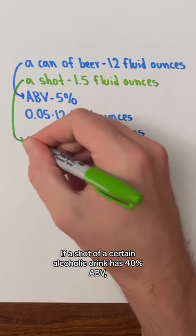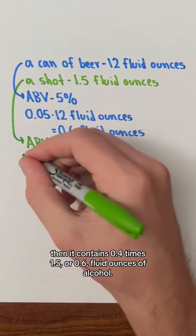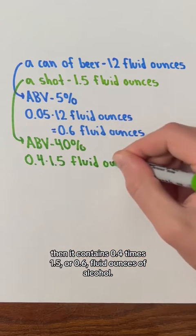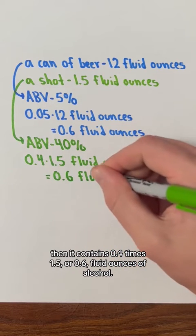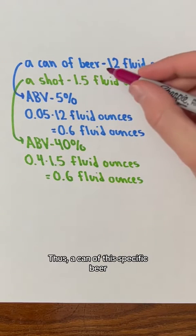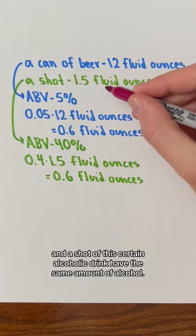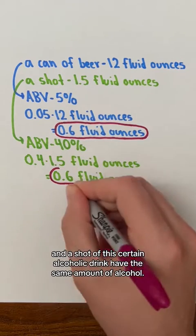If a shot of a certain alcoholic drink has 40% ABV, then it contains 0.4 times 1.5 or 0.6 fluid ounces of alcohol. Thus, a can of this specific beer and a shot of this certain alcoholic drink have the same amount of alcohol.